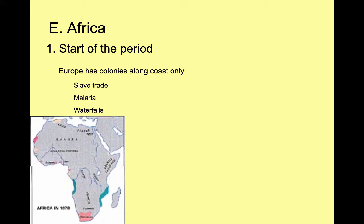If we go back to the start of the time period, back to 1750, the map shows Africa where everything in gray is controlled by Africans and everything in another color is controlled mostly by Europeans. If you notice, the Europeans at the start of the time period are just on the coast — most of Africa is still controlled by Africans. The Europeans had been interested in Africa for a long time, and from 1450 to 1750 it was primarily because of the slave trade, which is why they were on the coast.